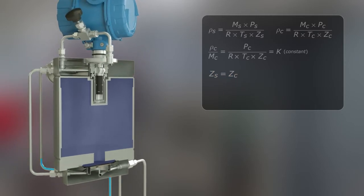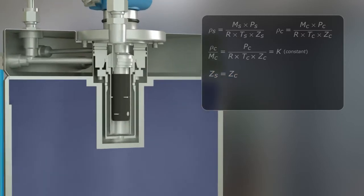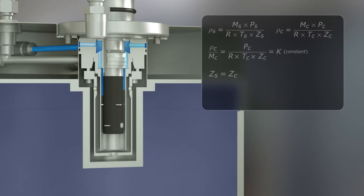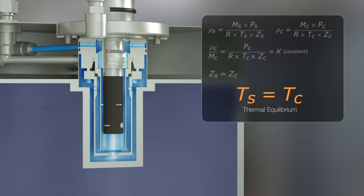After passing through the initial pipework, gas coming into the meter first flows through the sensor. The meter design and material act as a heat sink to establish thermal equilibrium between the sample and reference chamber gas.